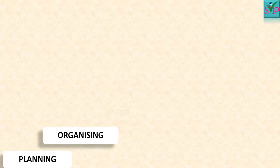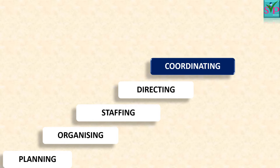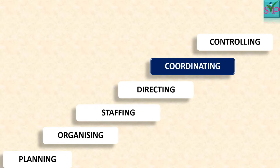As you can see on screen, there are total six management functions. It begins with the basic function of management — planning, then comes organizing, then staffing, directing, coordinating, and controlling. In today's video, we are studying the fifth management function, or we can say the fifth step in the process of management.